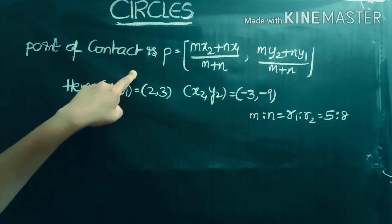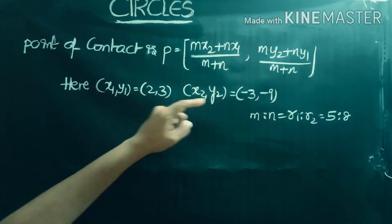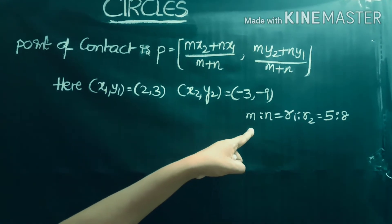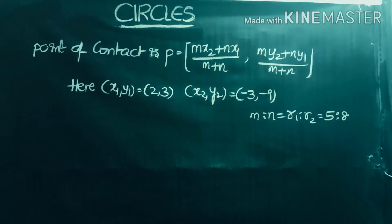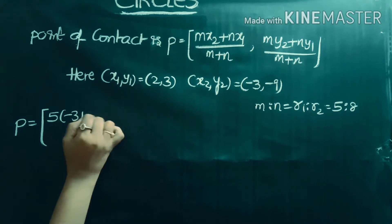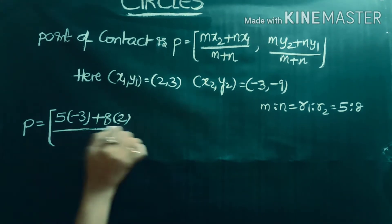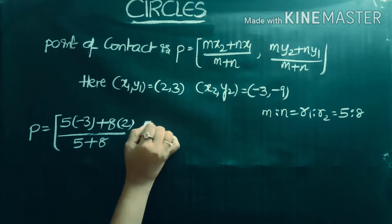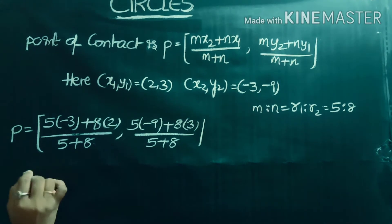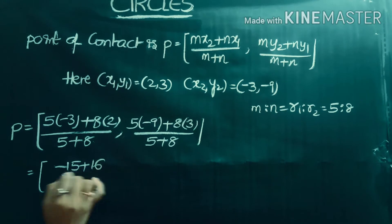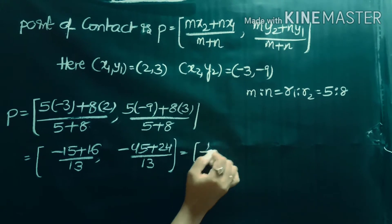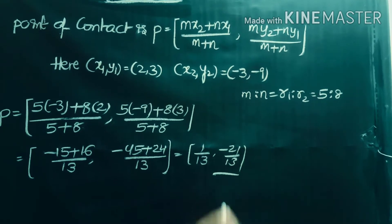The point of contact p is the internal center of similitude, given by the formula: p = (mx2 + nx1)/(m+n), (my2 + ny1)/(m+n), where x1,y1 = c1 = (2,3), x2,y2 = c2 = (-3,-9), and m:n = r1:r2 = 5:8. Substituting: p = (5×(-3) + 8×2)/(13), (5×(-9) + 8×3)/(13) = (-15+16)/13, (-45+24)/13 = (1/13, -21/13).